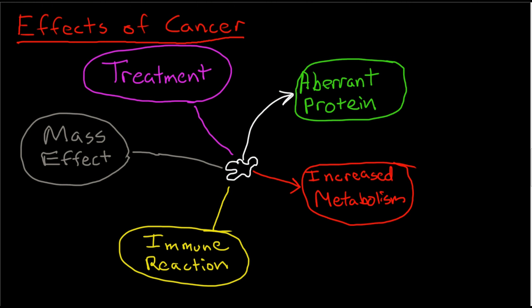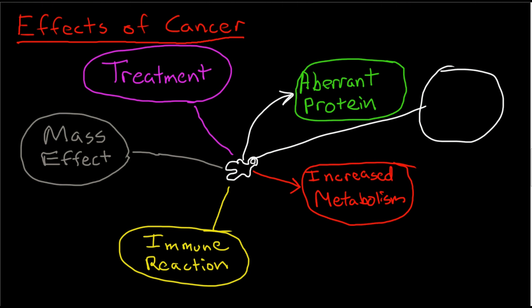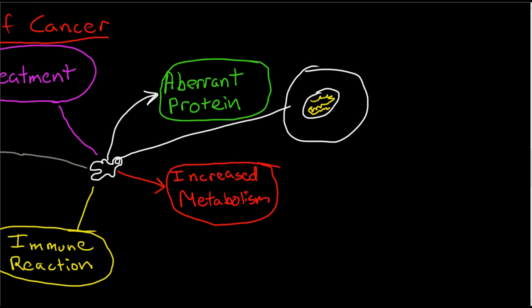I'm going to talk about aberrant proteins first. Remember, this little neoplasm here is a growth of cells that have mutated. The cells within this neoplasm have thousands or even tens of thousands of genetic mutations. So if we look inside the cell and inside its nucleus, we can look at its DNA and note that it has many, many mutations within it.